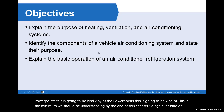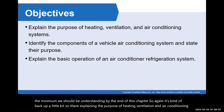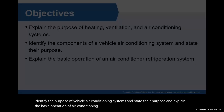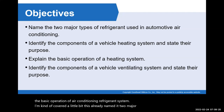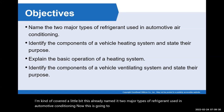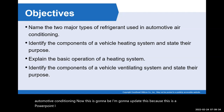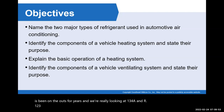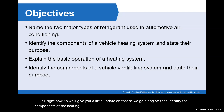Let's back up a little bit. The objectives include: explaining the purpose of heating, ventilation, and air conditioning systems; identifying the purpose of vehicle air conditioning systems and stating their purpose; explaining the basic operation of the air conditioning refrigerant system. Also, name the two major types of refrigerant used in automotive conditioning. I'm going to update this because this PowerPoint will talk about R12, which has really been on the outs for years. We're really looking at R134A and R1234YF right now.